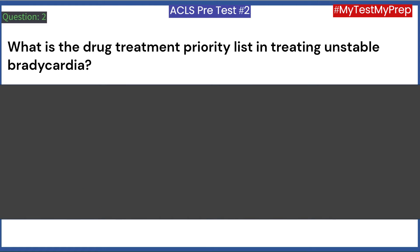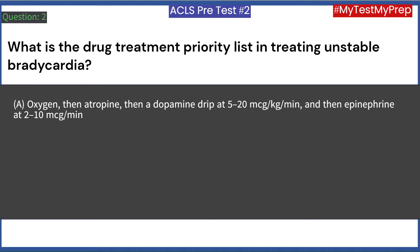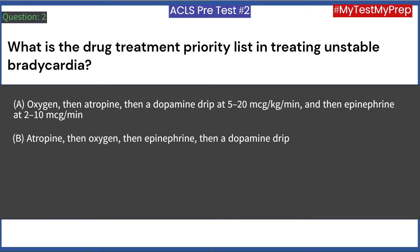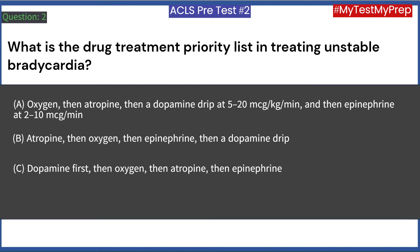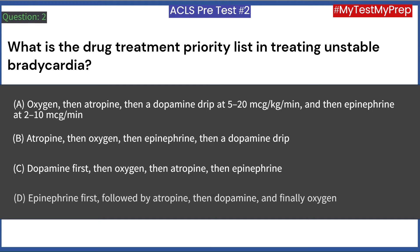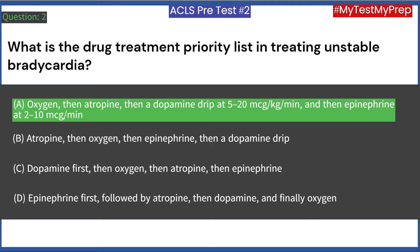What is the drug treatment priority list in treating unstable bradycardia? A. Oxygen, then atropine, then a dopamine drip at 5 to 20 mcg/kg/min, and then epinephrine at 2 to 10 mcg/min. B. Atropine, then oxygen, then epinephrine, then a dopamine drip. C. Dopamine first, then oxygen, then atropine, then epinephrine. D. Epinephrine first, followed by atropine, then dopamine, and finally oxygen. Answer: A. Oxygen, then atropine, then a dopamine drip at 5 to 20 mcg/kg/min, and then epinephrine at 2 to 10 mcg/min.